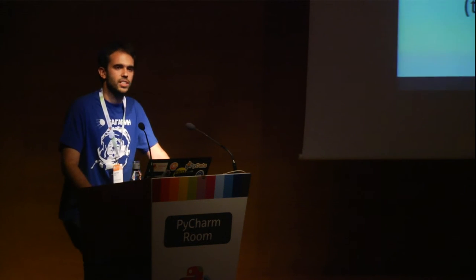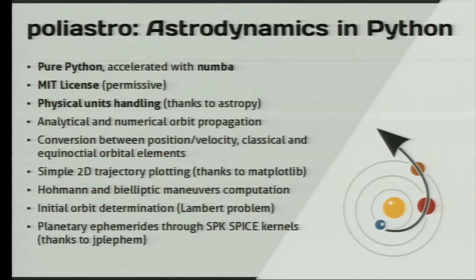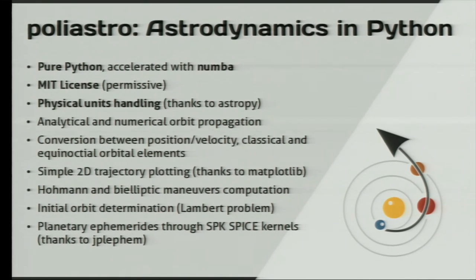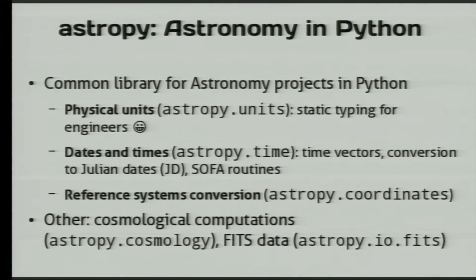To solve all these kinds of problems, I created Polyastro, which is an astrodynamics library written in Python. It is released under a permissive license and has physical units handling. It solves all the problems I mentioned. It includes some basic 2D plotting, as we will see after this.